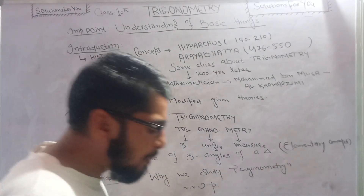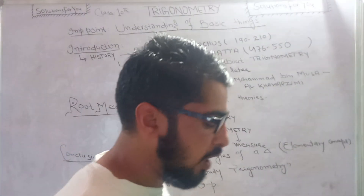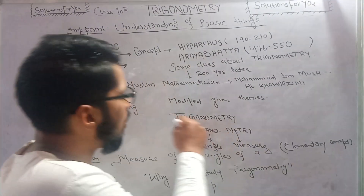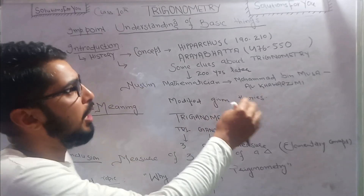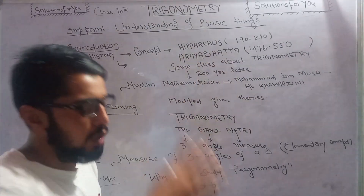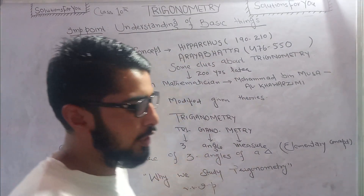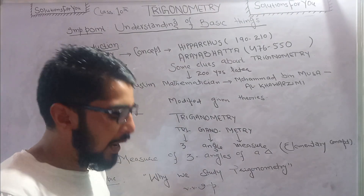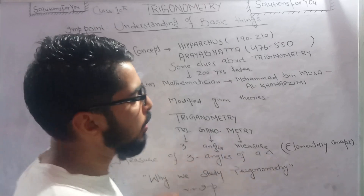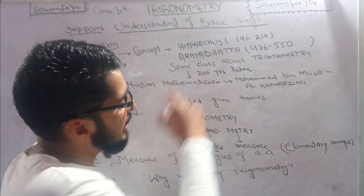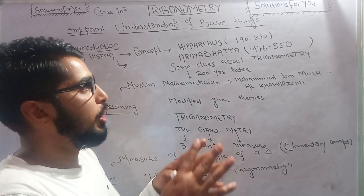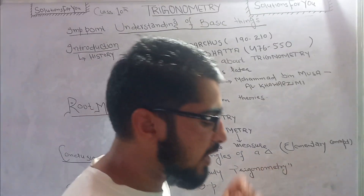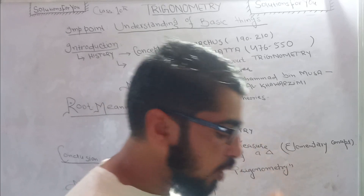After Al-Khwarizmi, the mathematicians who came later modified these concepts. They took the given theories and modified them further, and as a result they developed trigonometry into a concrete and very interesting topic in the mathematical field.